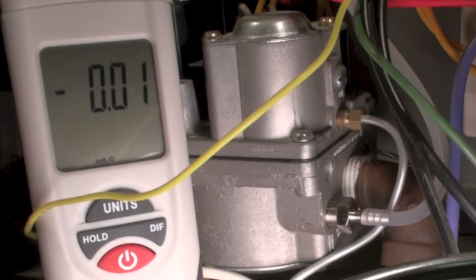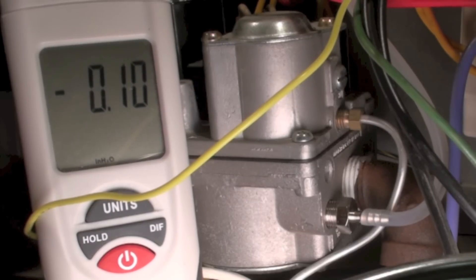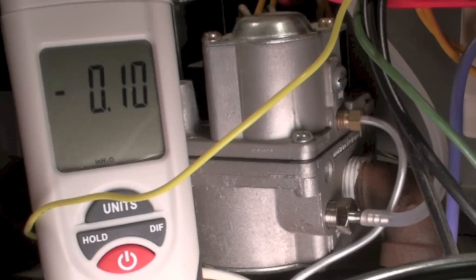Okay, we've got the manometer on it. I'm going to start up the four-strap blower. Now that's already put one-tenth of an inch water column on this thing. Reason is I pressurized the combustion chamber. Remember, this is a positive pressure combustion chamber.